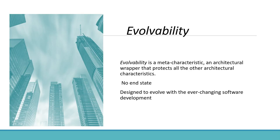Evolvability as a concept is basically a meta-characteristic or an architectural wrapper that will protect all architectural characteristics. An architecture can have multiple characteristics — like it should be scalable, maintainable, extensible, auditable — there is a long list. All of these characteristics should essentially evolve with time; that is what evolvability means.